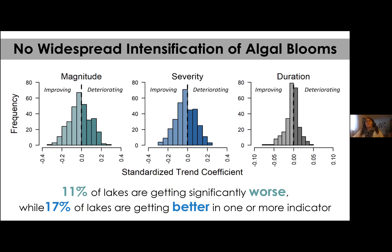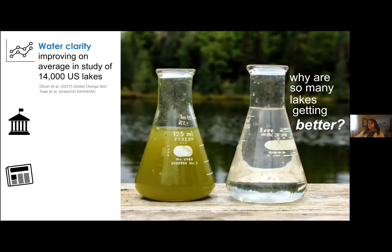Among the 323 lakes, there was a lot of variability in the three bloom metrics. But one thing is really clear: there is no widespread intensification of algal blooms. Only 11% of lakes were getting significantly worse in at least one of the metrics—whether magnitude, severity, or duration. Surprisingly, however, 17% of the lakes were actually getting better, improving in one or more of those metrics. In fact, of the 17% of lakes getting better, two-thirds had at least two of the metrics improving, if not all three. So there's a lot of evidence for improving.